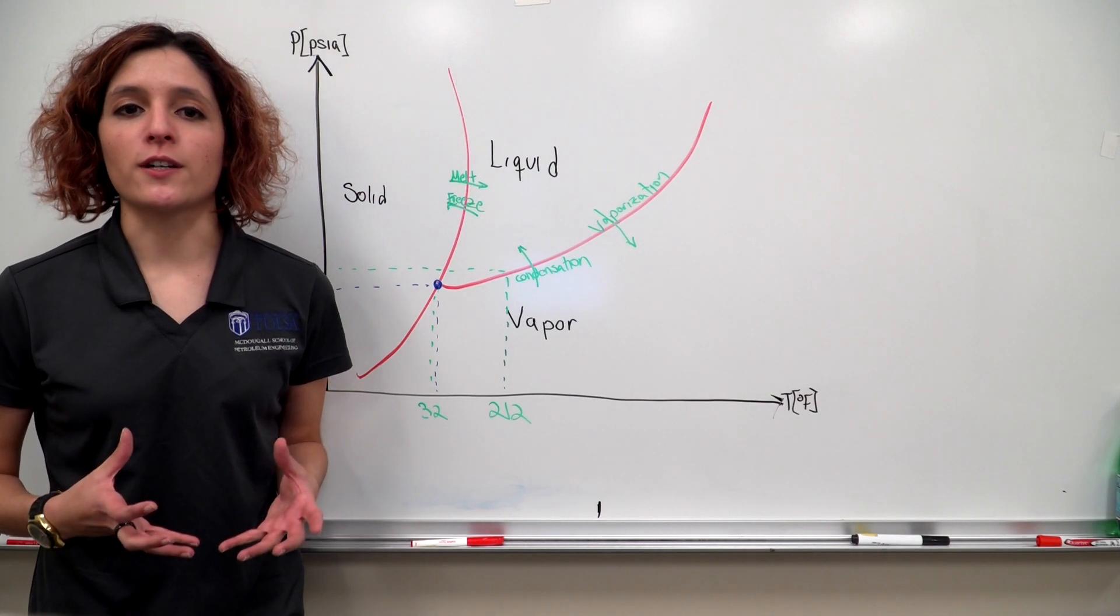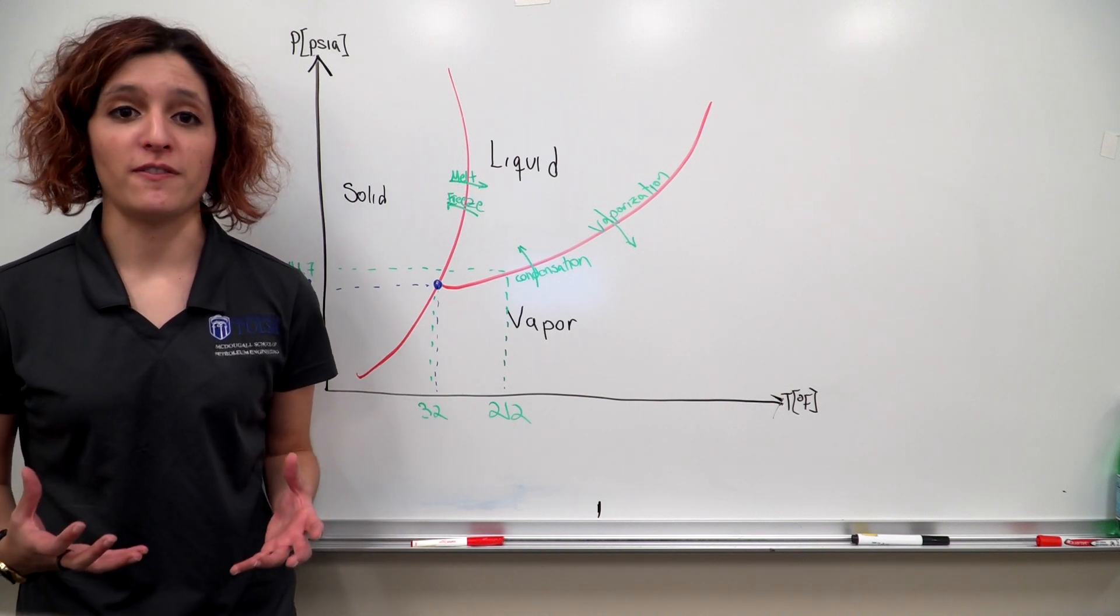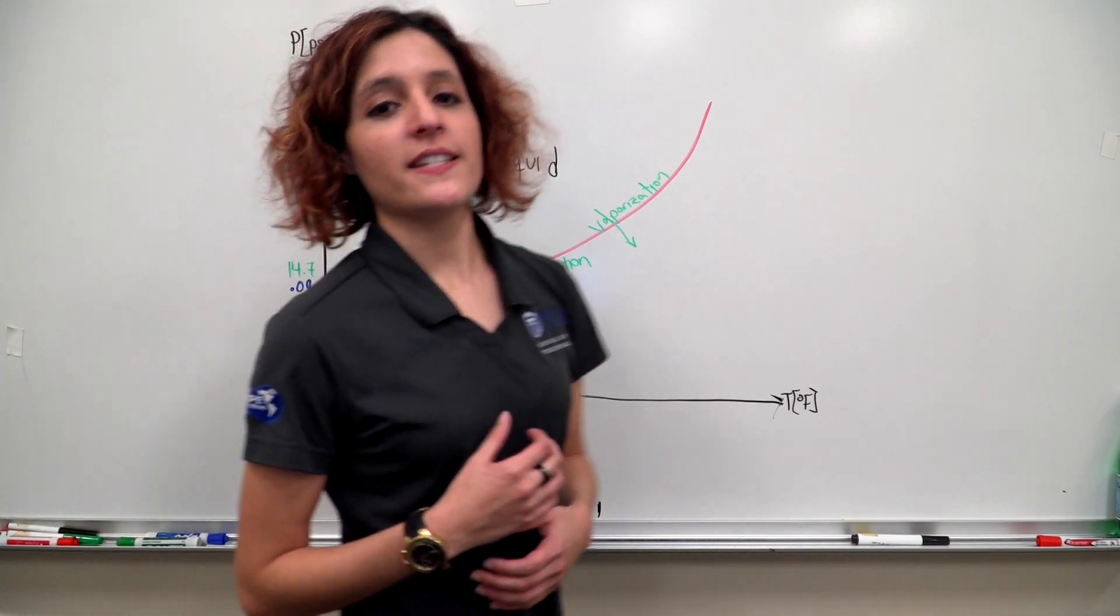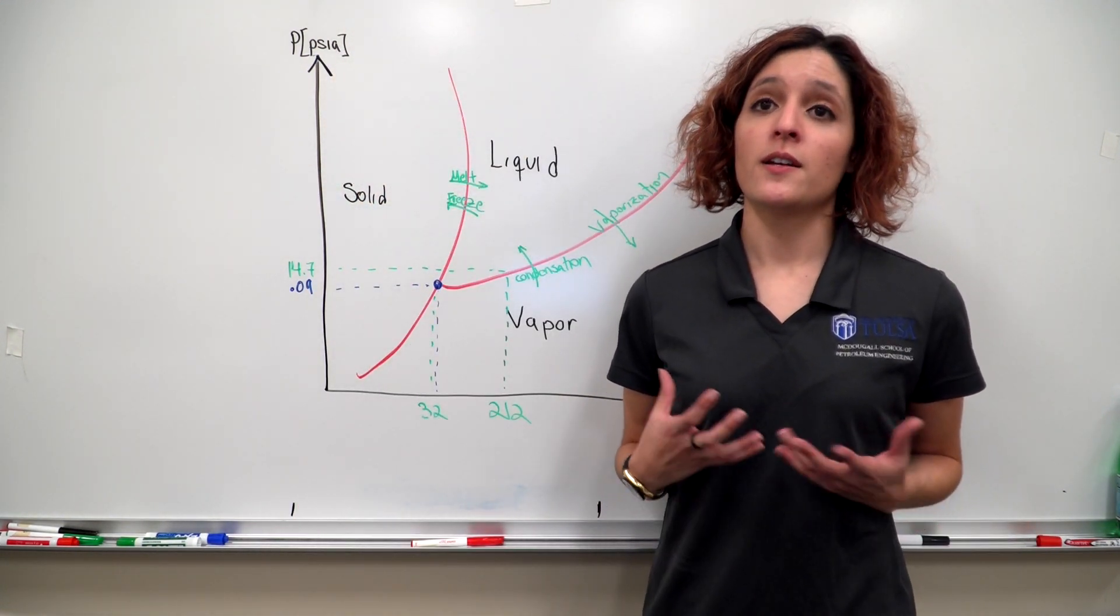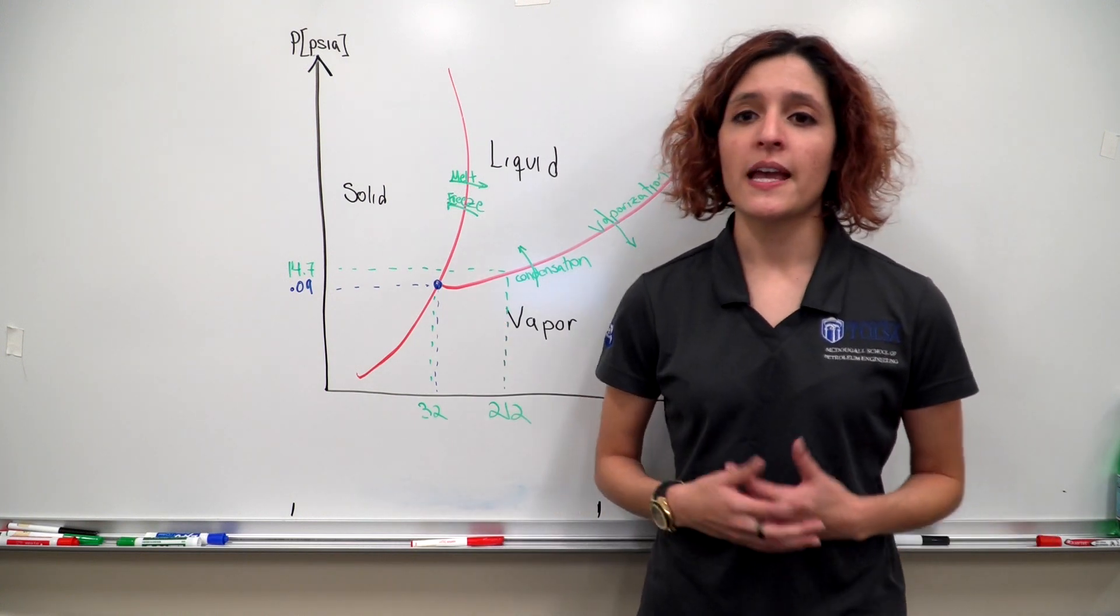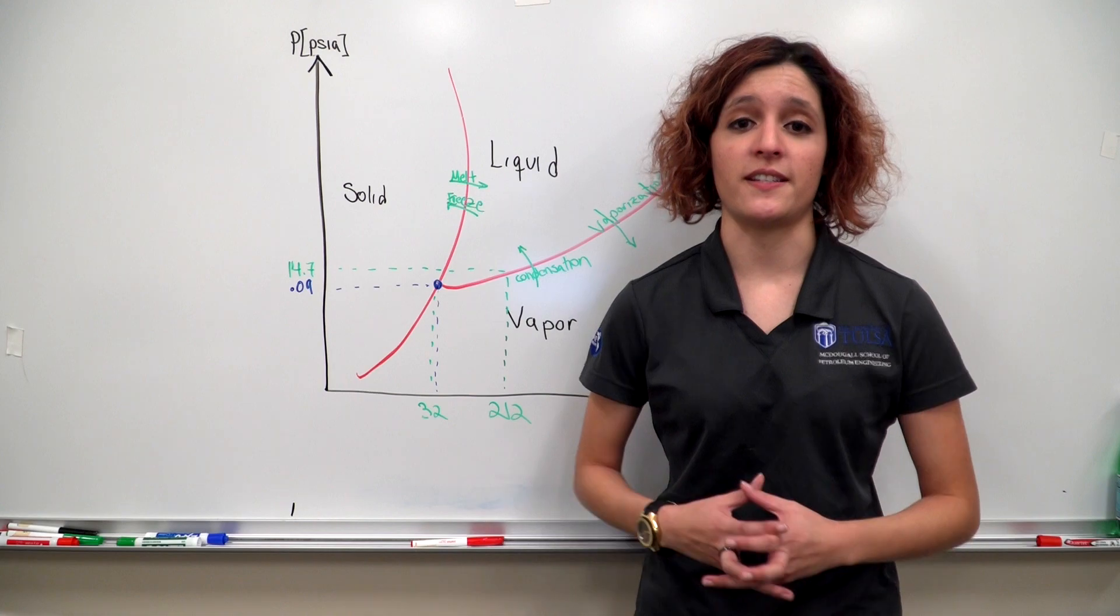The triple point is a theoretical temperature and pressure at which an element could be any of the three phases. This happens at 32 Fahrenheit and 0.09 PSIA, and this is below atmospheric pressure and therefore only exists in a vacuum.